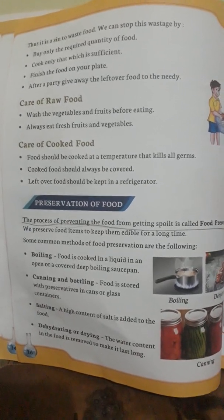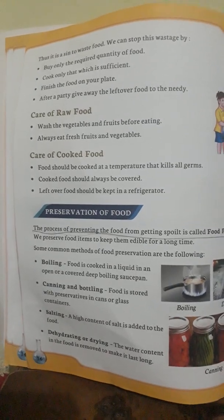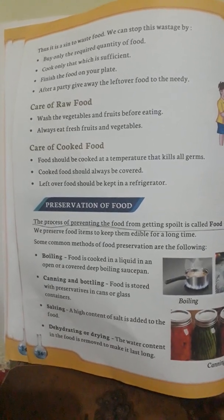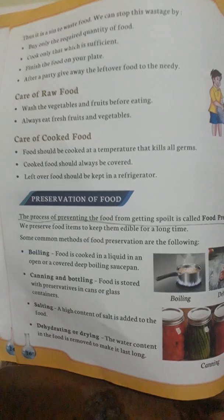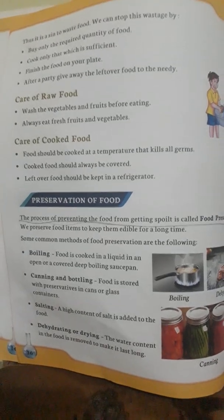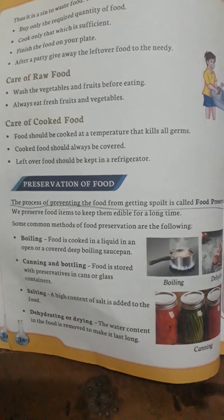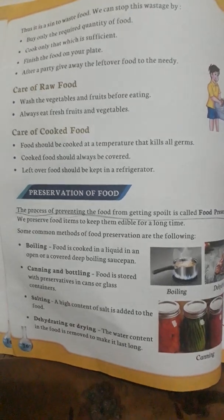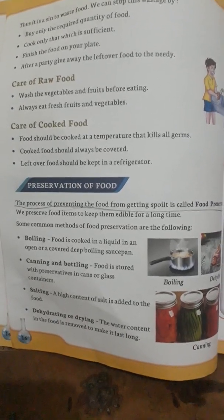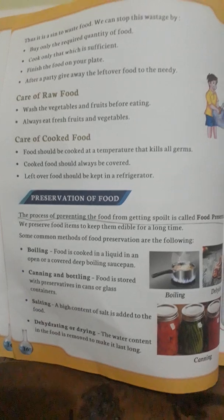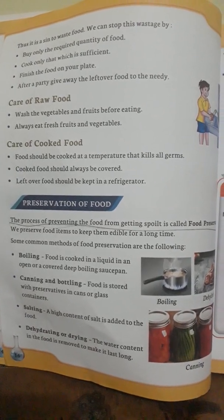Some common methods of food preservation are as follows. The first method is boiling — it is the process of applying heat to water until the temperature reaches 100 degrees Celsius. The next method is canning and bottling, which is a method of preserving food in which the food containers are processed and sealed in an airtight container.